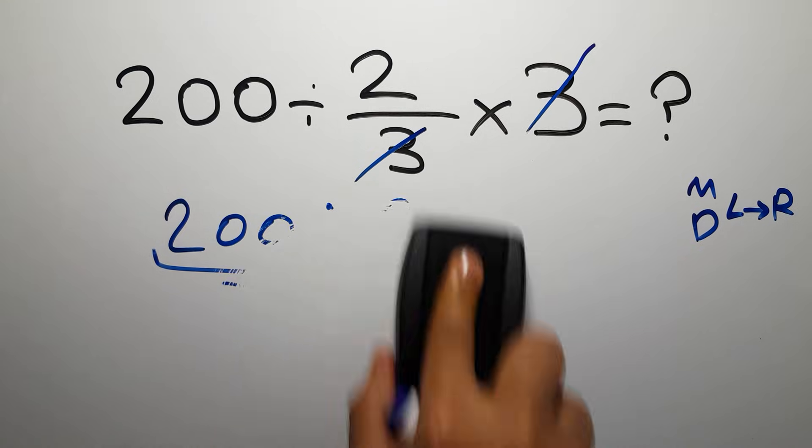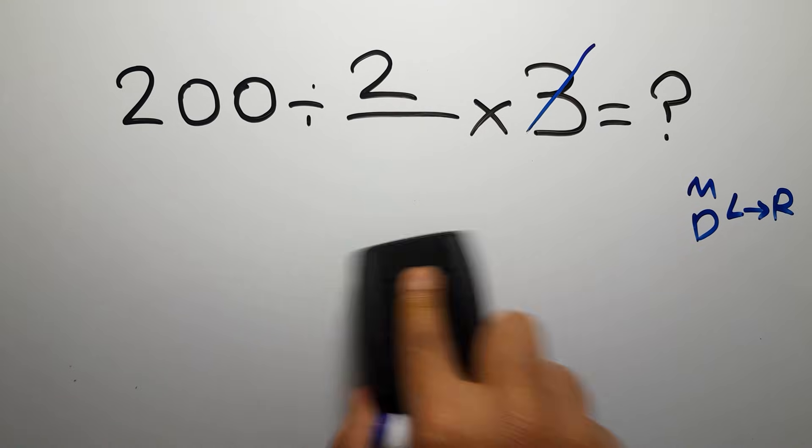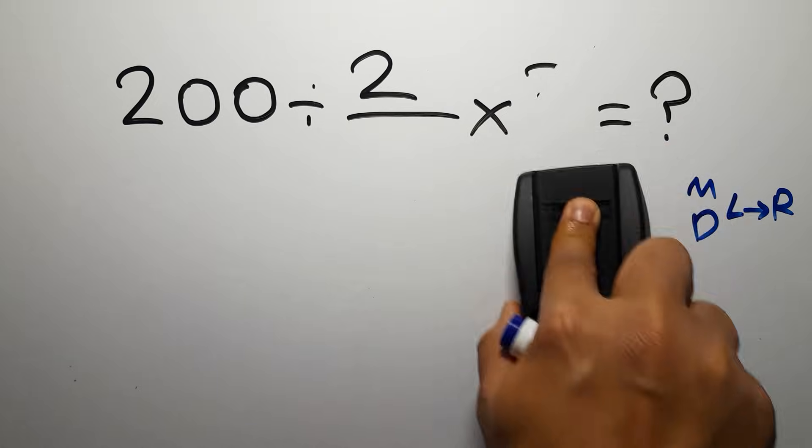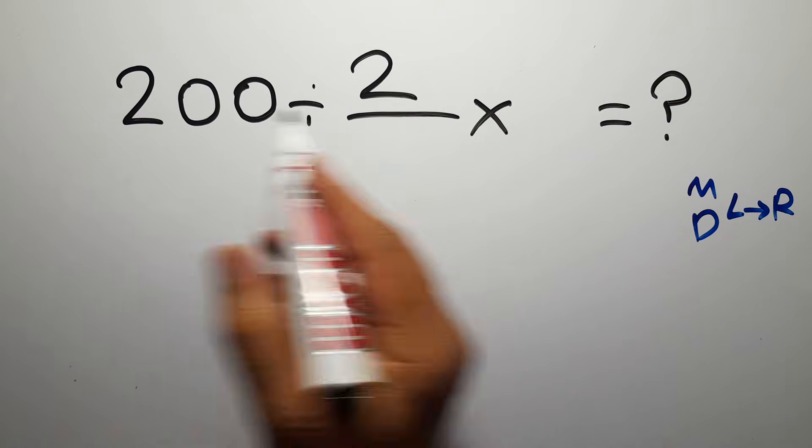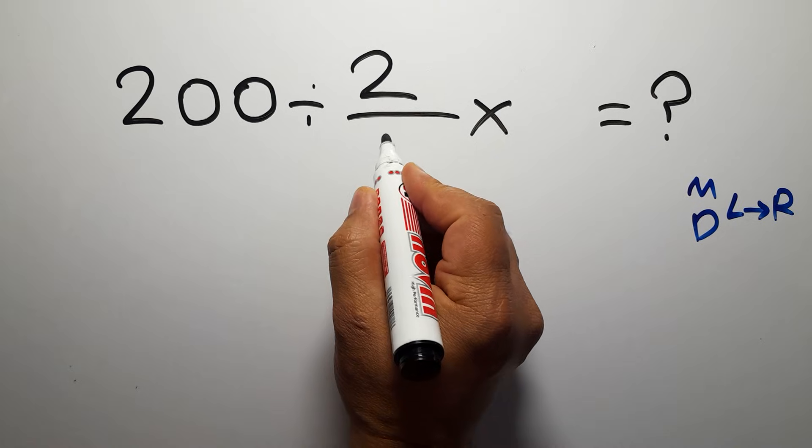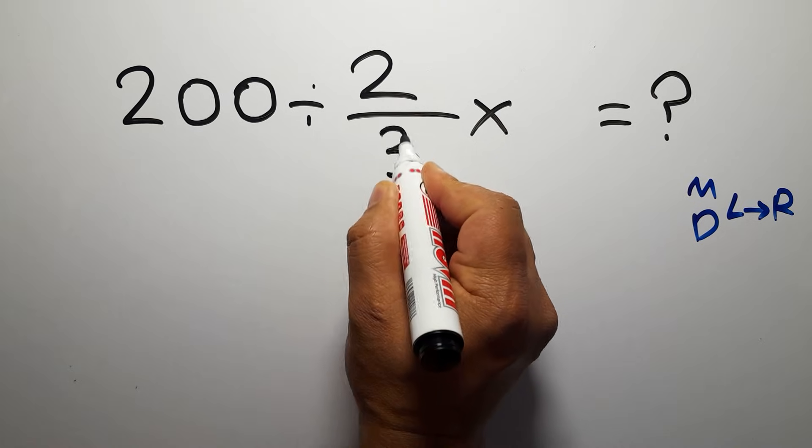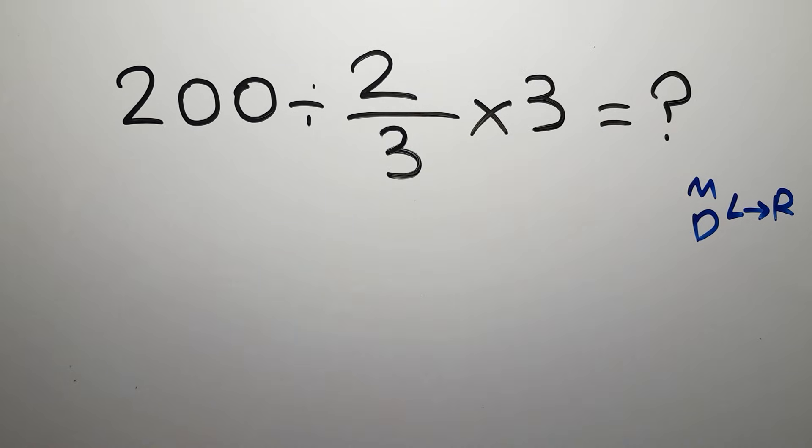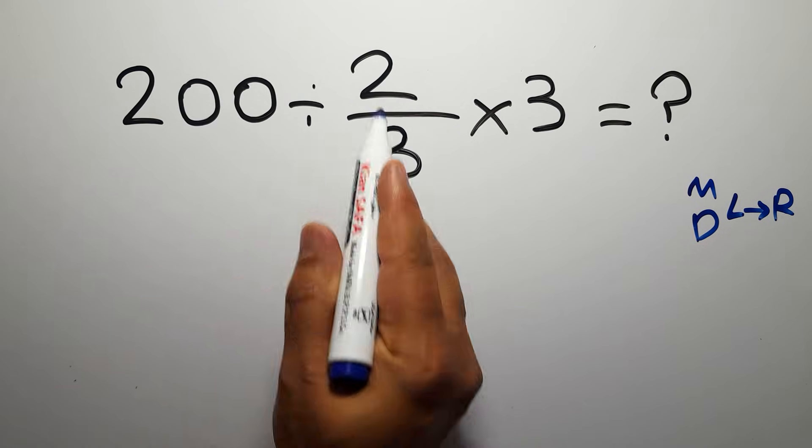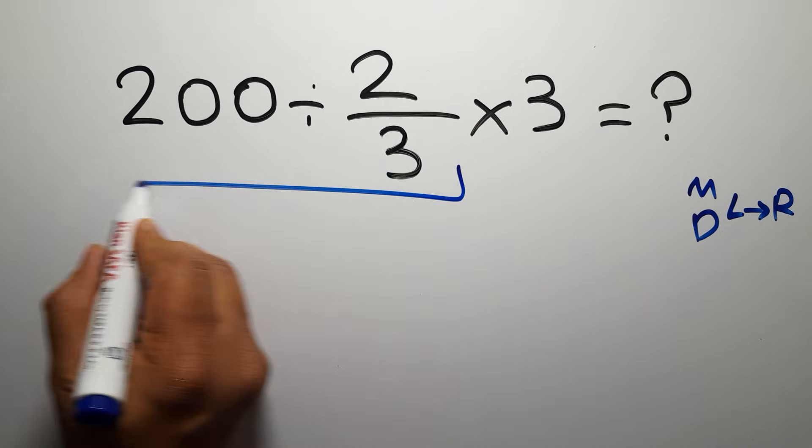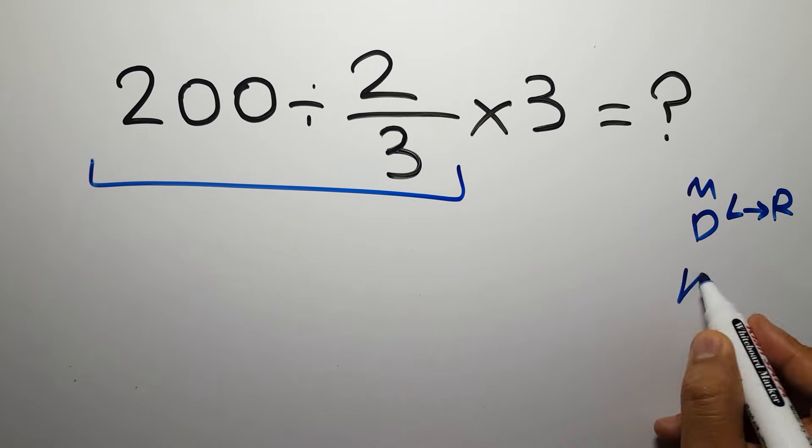We have 200 divided by 2 over 3, then times 3. First we have to do this division: 200 divided by 2 over 3, according to the KCF rule.